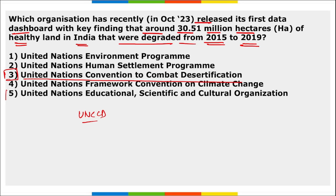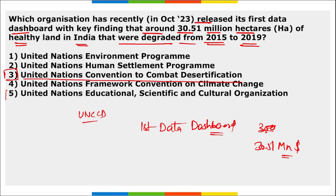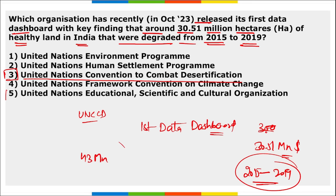Next question: which organization released the first data dashboard showing that around 30.51 million hectares of healthy land in India were degraded from 2015 to 2019? The answer is UNCCD — the United Nations Convention to Combat Desertification. According to this dashboard, India's total degraded land equals the size of 43 million football pitches.